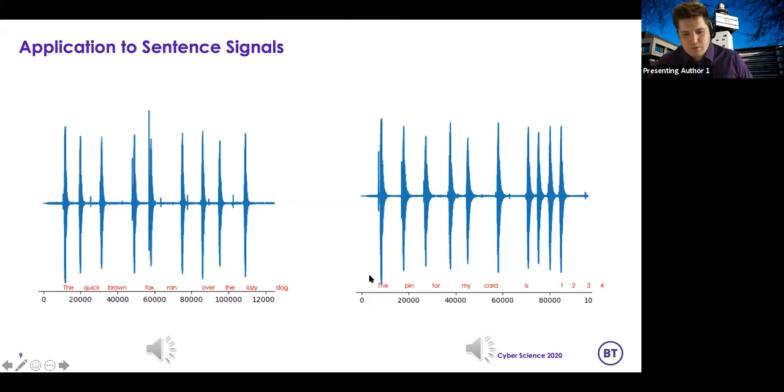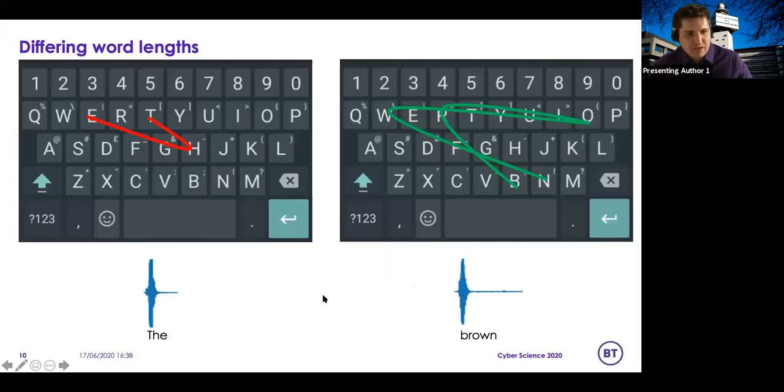And if we look at the actual swiping that's done when you type different words, you can see how different words can have very different timings. So 'the,' for example, there's nice short, three characters, they're all fairly close together. 'The brown,' only five characters, so not that much longer, but still there's a lot more travel over the keyboard. This means that word takes longer.